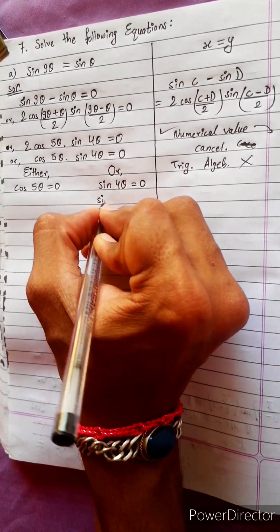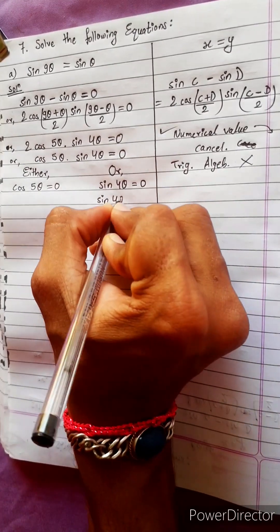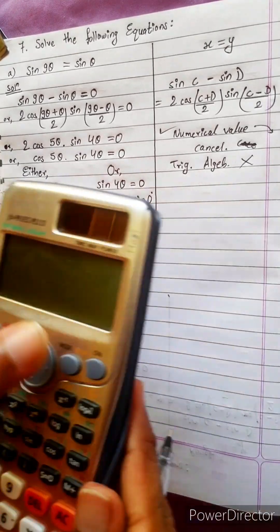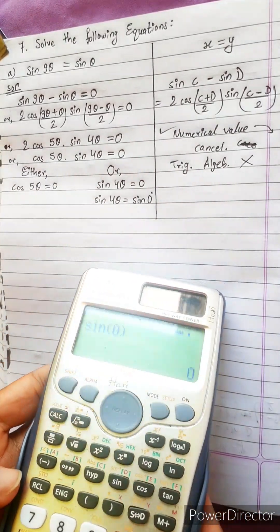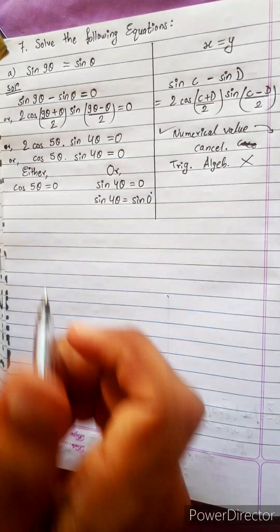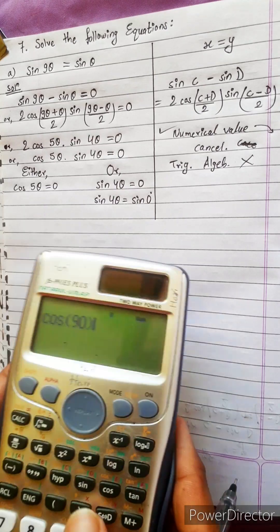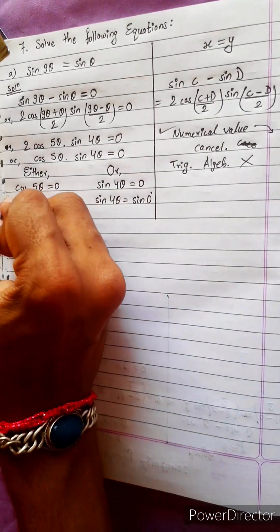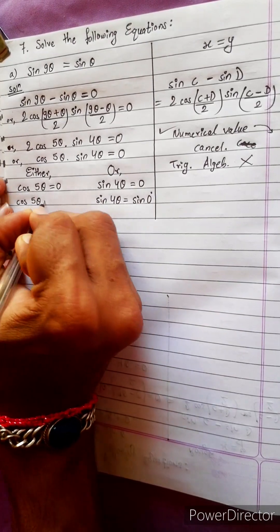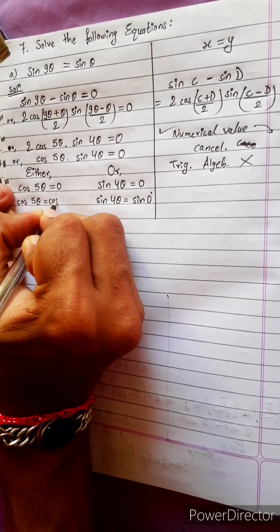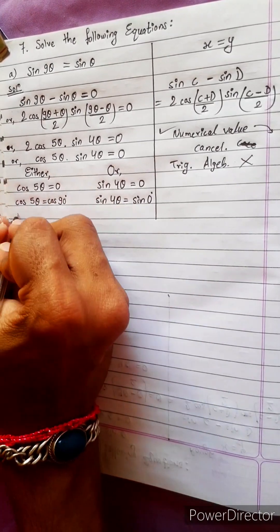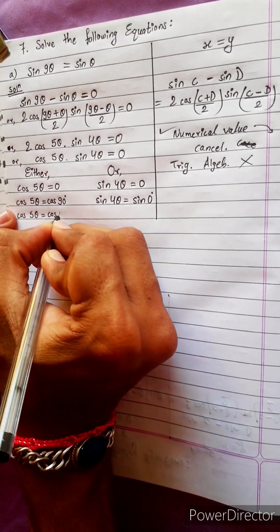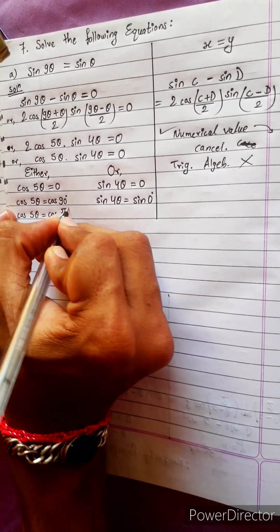sin 0 degrees equals 0, and cos 90 degrees equals 0. So cos 5θ equals cos 90°, which means cos 5θ equals cos(π/2).